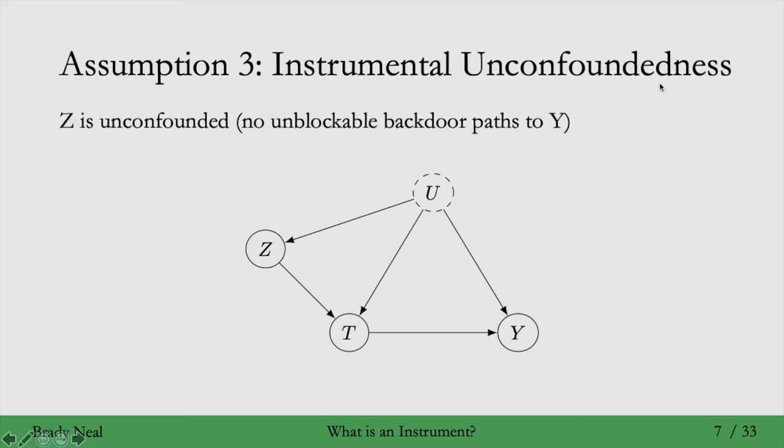Then the third assumption for Z to be an instrument is what we'll call instrumental unconfoundedness. That means that the effect of Z on Y is unconfounded. In other words, there are no unblockable backdoor paths to Y. So in this graph, we see that we have a backdoor path from Z to Y, which is Z to U to Y. And because U is unobserved, we can't block that backdoor path. So we don't have instrumental unconfoundedness in this graph. We have to remove more edges to get instrumental unconfoundedness. So if we remove this Z to U edge, then we have instrumental unconfoundedness satisfied. Just like the assumption in the last slide, this assumption corresponds to removing an edge from the graph.